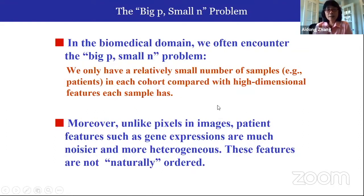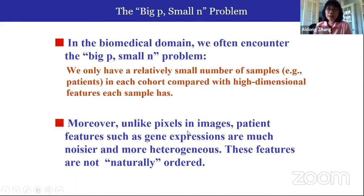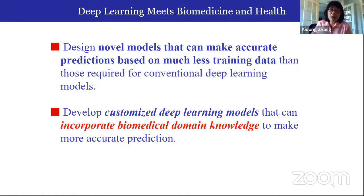We are seeing the limitations of applying deep learning to bioinformatics because of the well-known problem called the big P small n problem, which means we only have a small number of samples in each cohort compared with the high-dimensional features each sample has. Patient features such as gene expressions are much noisier, more heterogeneous, unordered, and very high-dimensional.